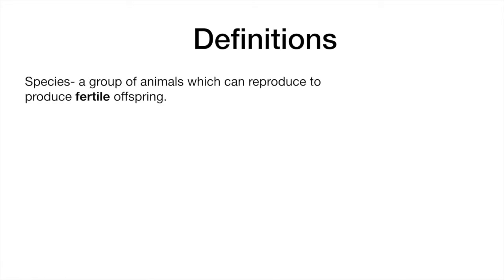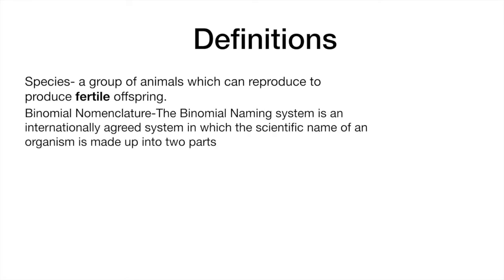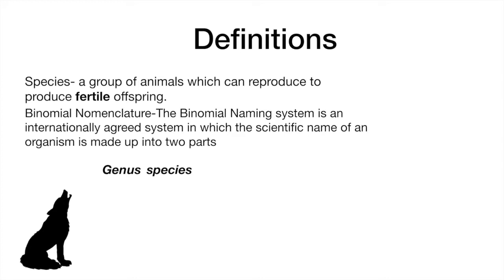Let's define some important terms. A species is a group of animals which can reproduce to produce fertile offspring. The binomial naming system is an internationally agreed system in which the scientific name of an organism is made up of two parts: the genus, in which the first letter is written in caps, and the species within the genus, which is written in all small letters. For example, a wolf is scientifically written as Canis lupus — Canis being the genus and lupus being the species within the genus.